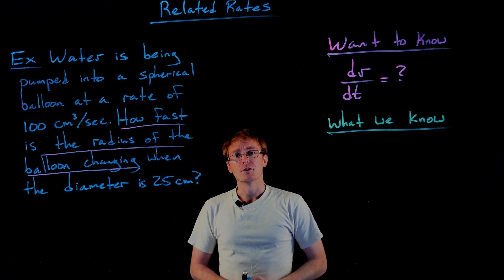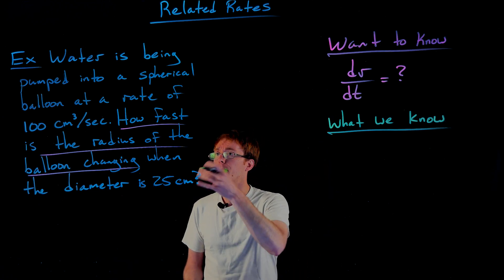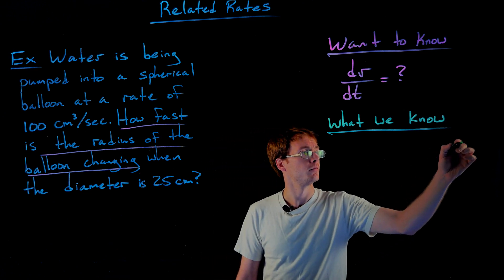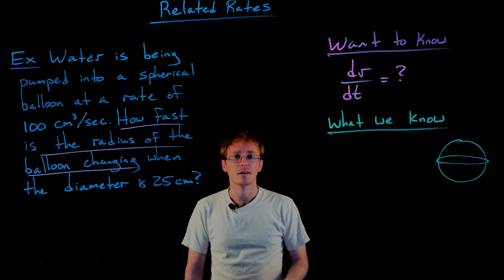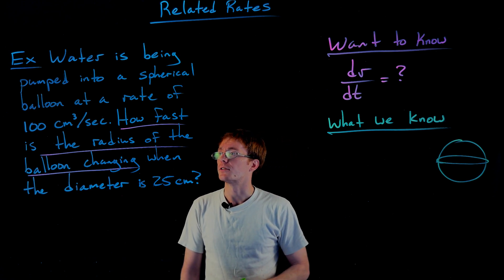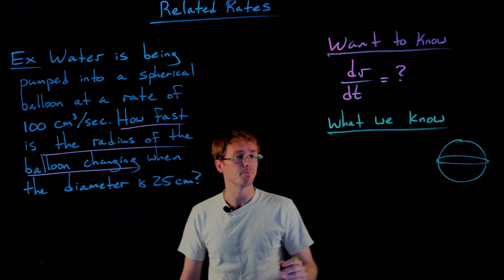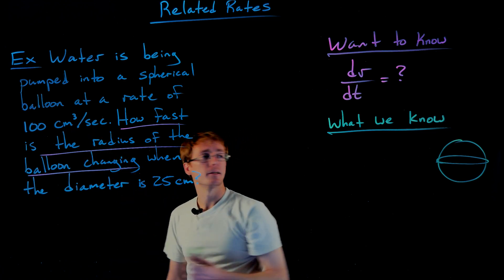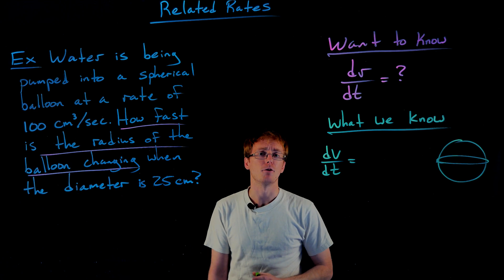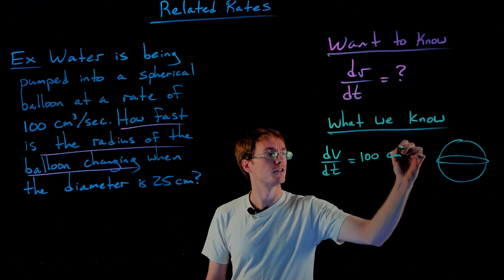After identifying what we want to know, we identify what we already know that can help us find dr/dt. We read the problem again and fill in what we know. Water is being pumped into a spherical balloon — let's draw a picture of that. Water is pumped in at a rate of 100 cubic centimeters per second. Looking at the units, cubic centimeters is a unit of volume and seconds is a unit of time, so that rate describes dV/dt. We know dV/dt equals 100 cubic centimeters per second.